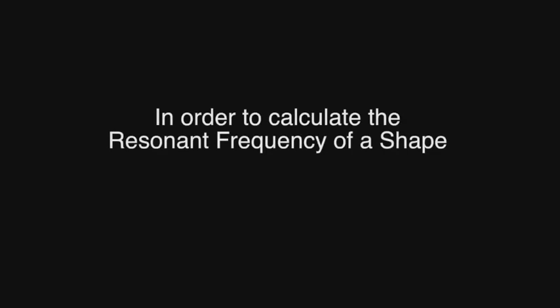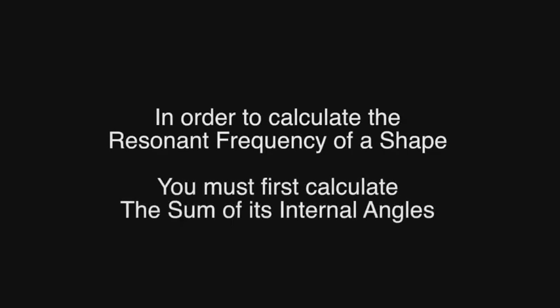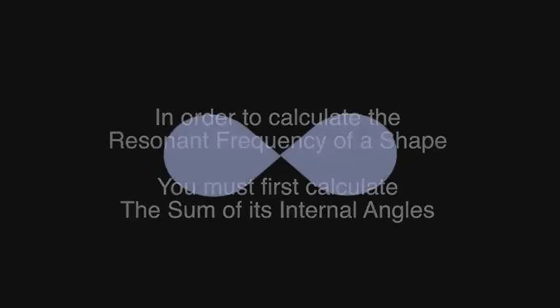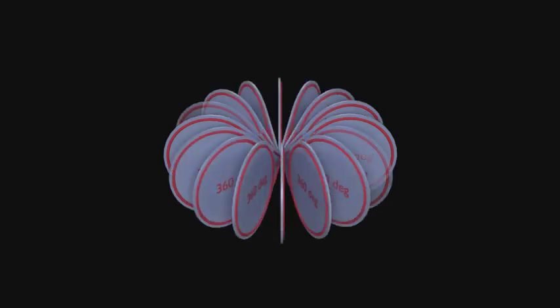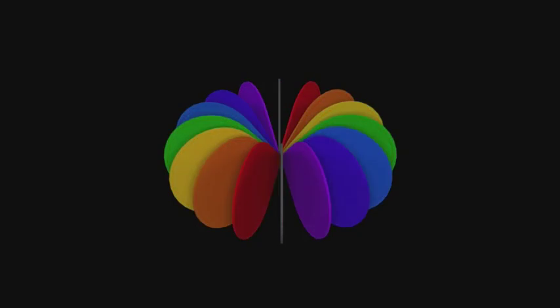In order to calculate the resonant frequency of any shape, you must first calculate the sum of its internal angles. To calculate the resonant frequency of an imploded sphere, we must produce the sum of the internal angles contained within all eight planes. The eight planes contain two circles, 360 degrees plus 360 degrees, connected by intersecting angles of 90 degrees and 90 degrees. When multiplied by the eight planes, we arrive at 7200 degrees.